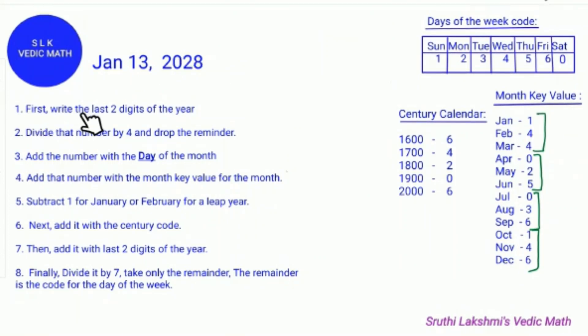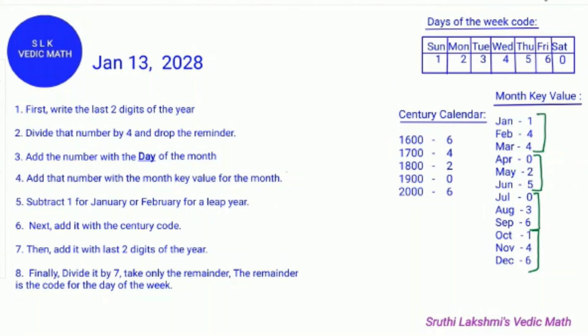First, write the last two digits of the year. The last two digits of 2028 is 28, so we write 28.